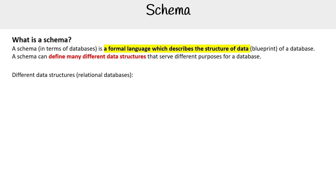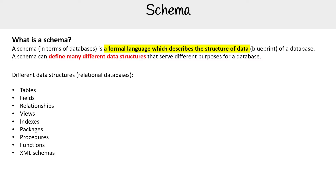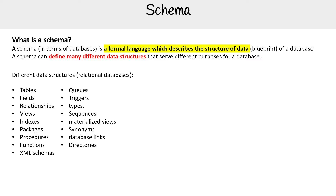Different data structures in a relational database could be things like tables, fields, relationships, views, indexes, packages, procedures, functions, XML schemas, queues, triggers, types, sequences, materialized views, synonyms, database links, and directories — and these will highly vary based on the database that you're using.